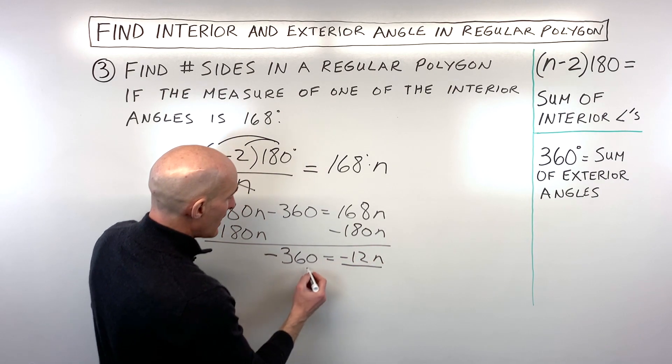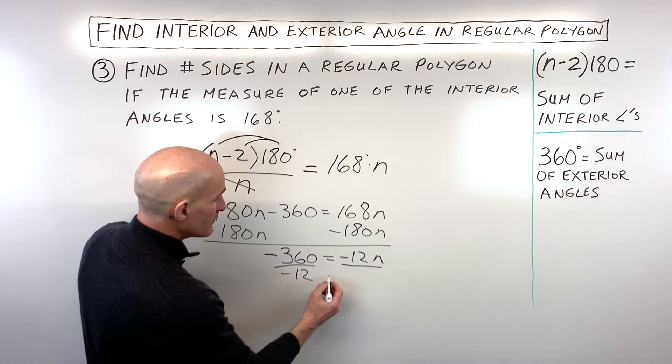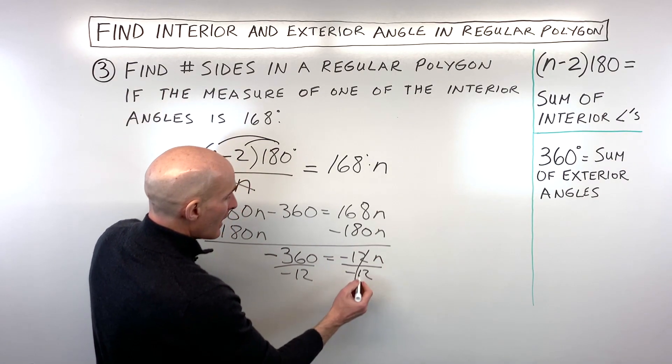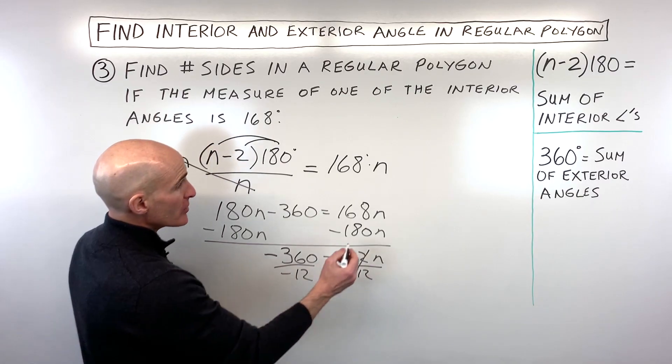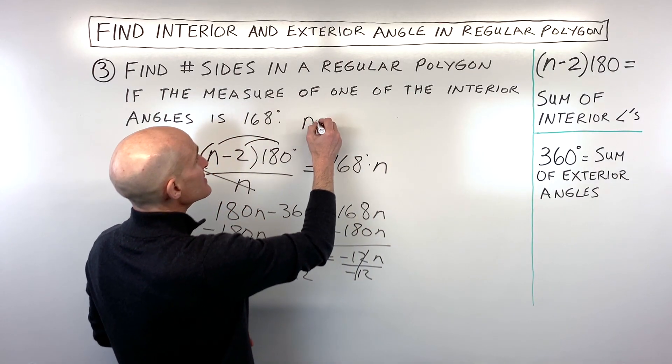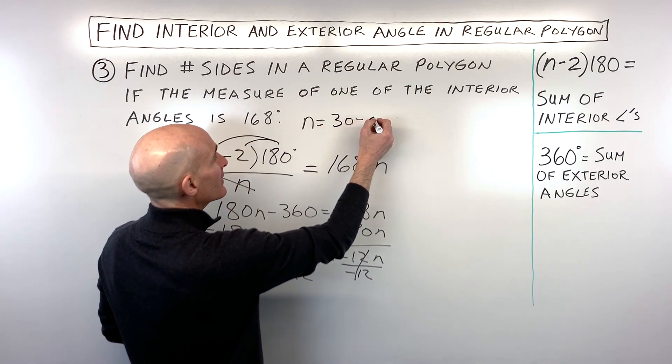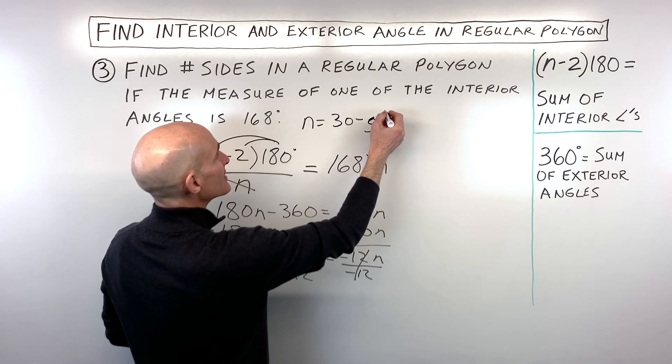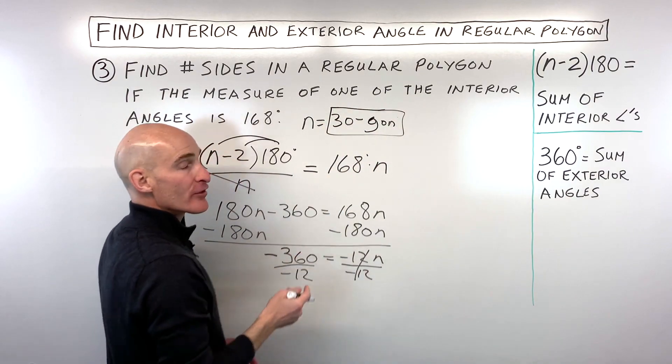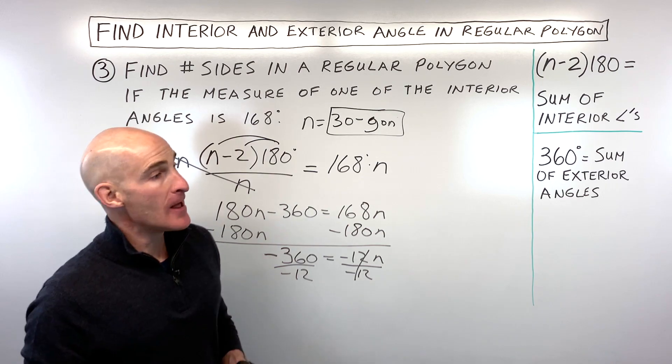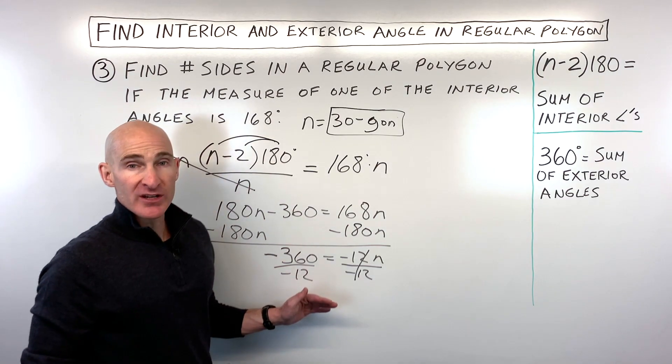And then if we divide both sides by negative 12, n is coming out to 30. So what we have here is a 30-gon, basically meaning this is a polygon with 30 sides or 30 angles. Now this took a little bit of time.